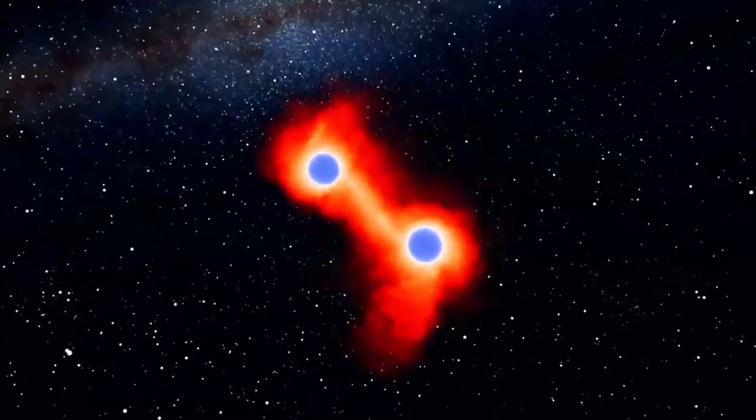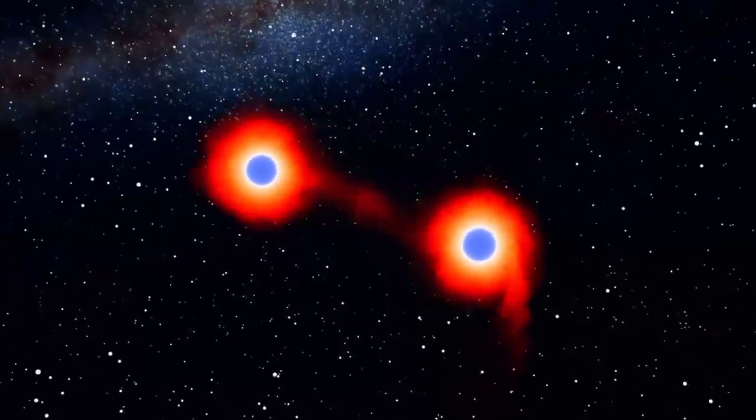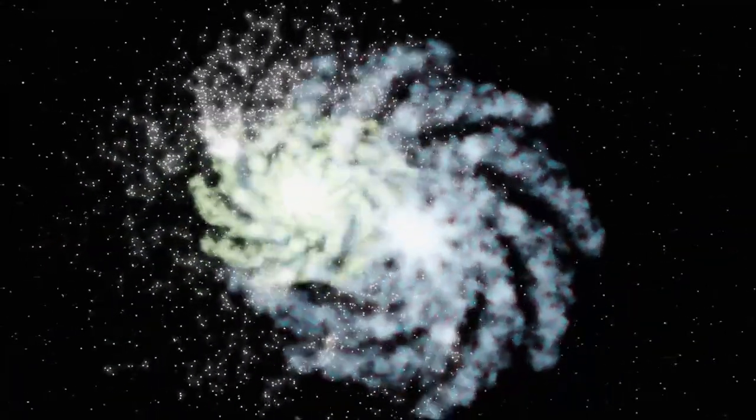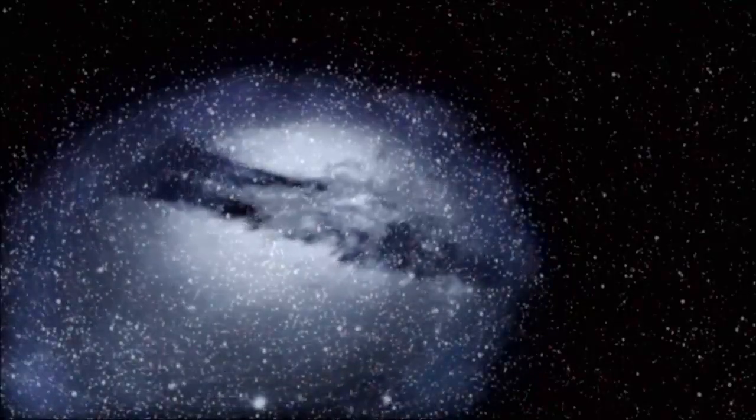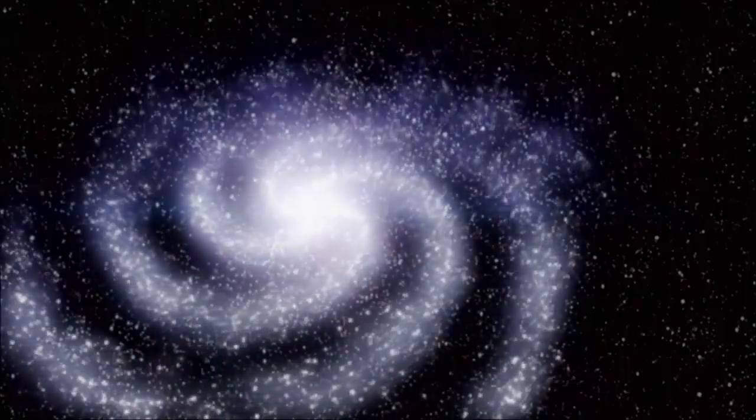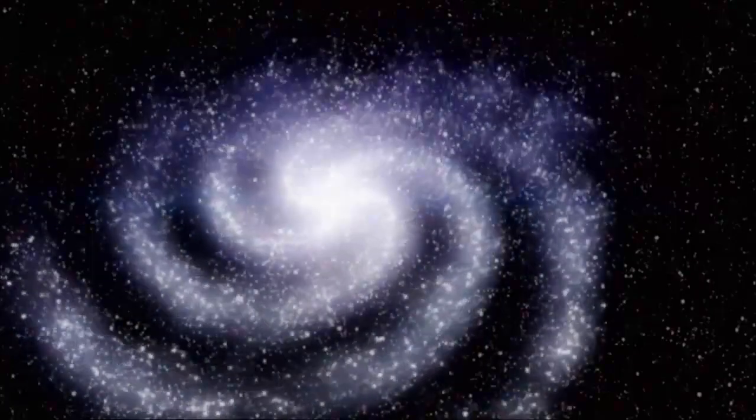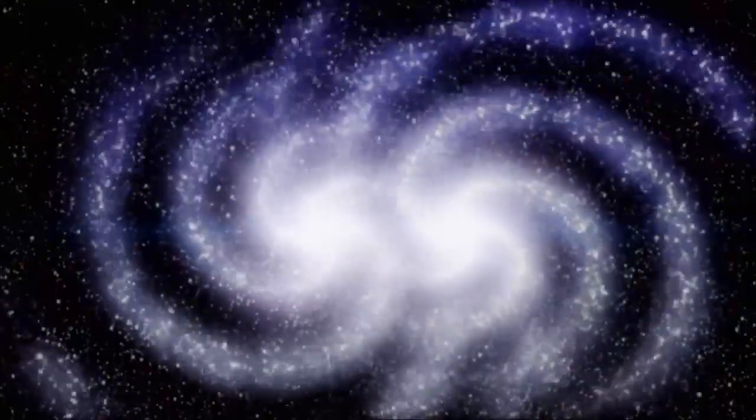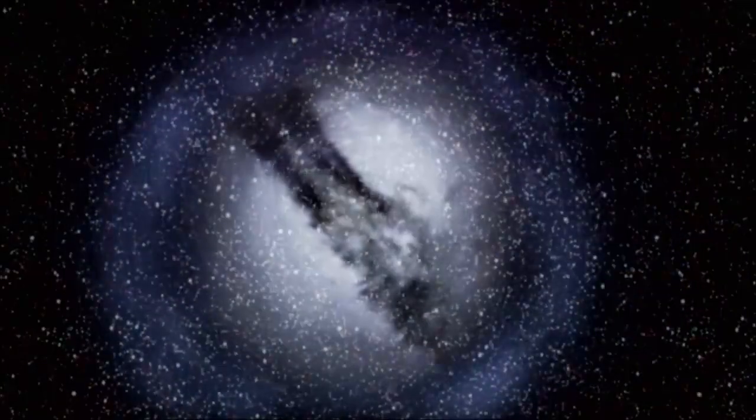What probably won't happen is a collision of stars. Even though both galaxies contain billions of stars, the space between them is enormous. They will gravitationally interact, changing their direction and motion. Eventually, the merged spirals will settle down to become an elliptical galaxy.